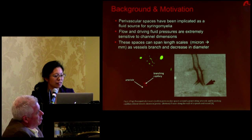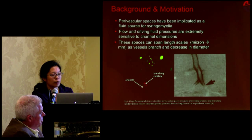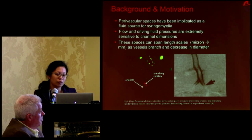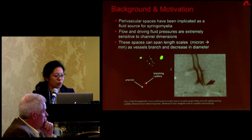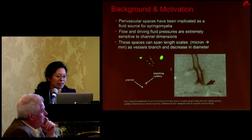These spaces can span multiple length scales, from micron all the way to millimeter. As you get from the larger vessels and they branch, they get smaller and smaller, and so do the paravascular spaces. What we're proposing to do — and other people have done these kind of distribution studies — is just be a little bit more quantitative about it. Here are just some previous studies where they're looking at tracer distributions that have basically accumulated in these kind of paravascular spaces.